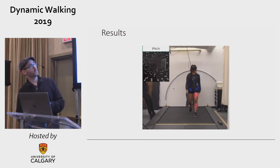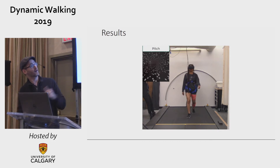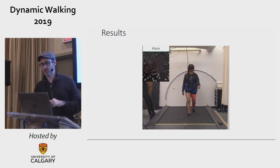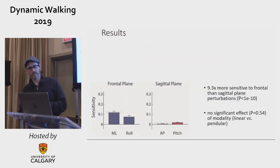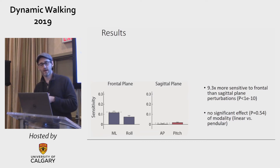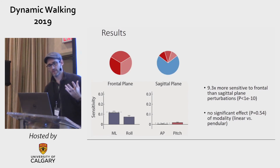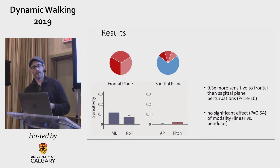It was a five-foot by seven-foot treadmill. Comparing frontal plane versus sagittal plane, subjects were 9.3 times more sensitive to the frontal plane perturbations versus sagittal — which is what we expected. We did not find an effect of perturbation type — linear versus pendular — which surprised me. The roll was slightly less sensitive than the medial-lateral, and pitch slightly higher than the AP, but overall the pattern is clear: in the frontal plane active control is dominant, and in the sagittal plane passive stability appears to be very significant.